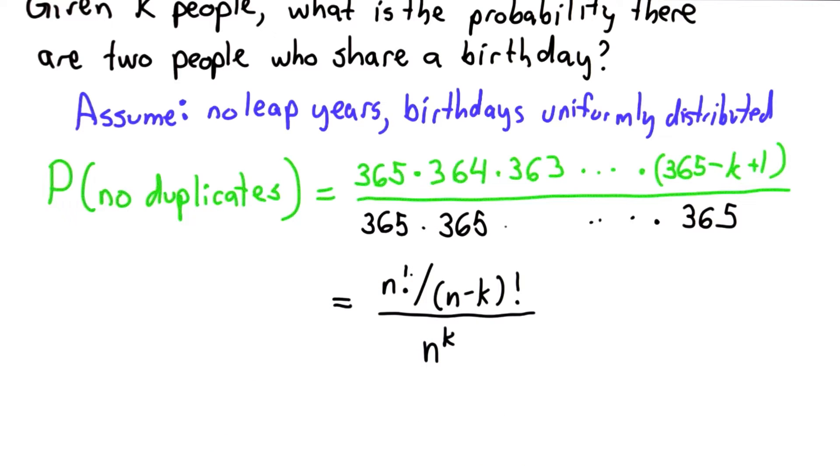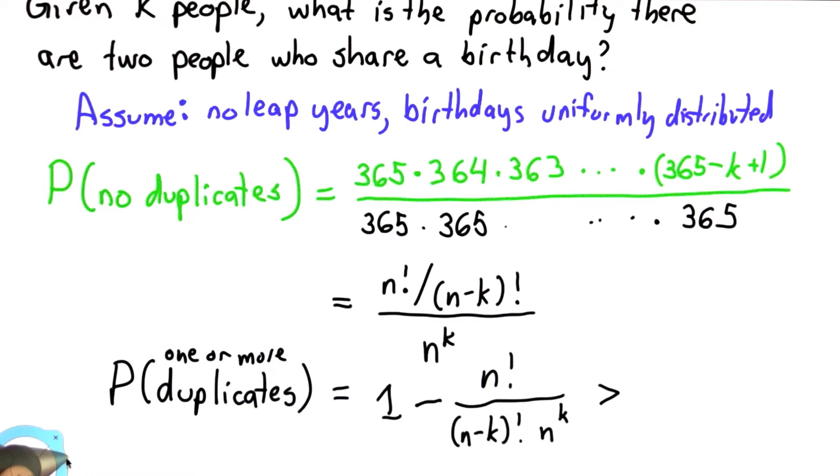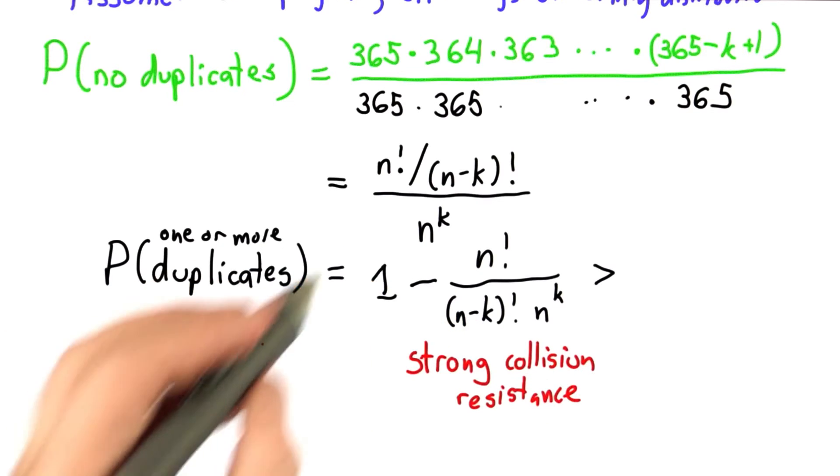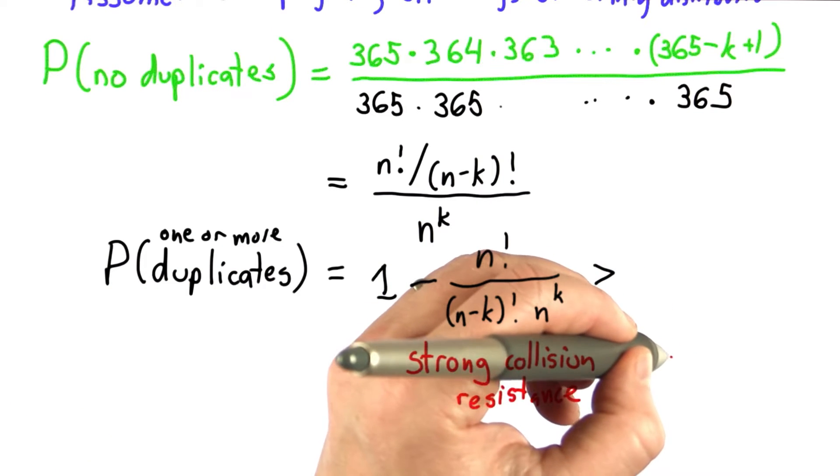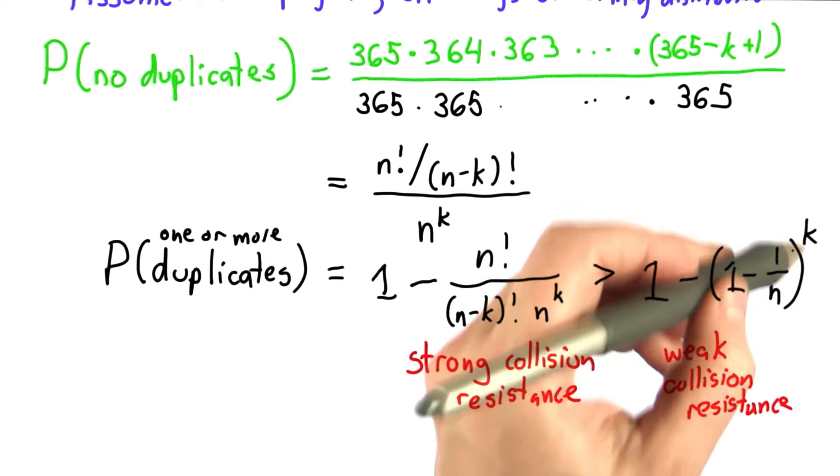So our probability that there are duplicates is just 1 minus this. This is what we need for strong collision resistance. It's higher than what we needed for weak collision resistance, which was 1 minus 1 minus 1 over n to the k.